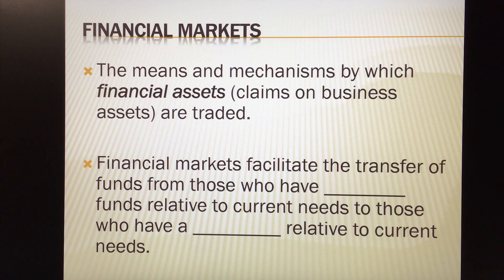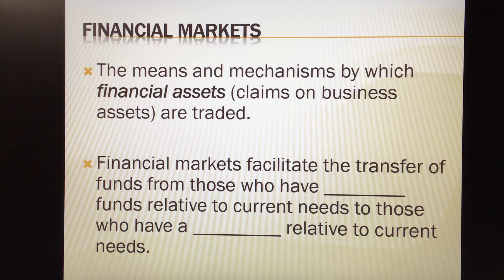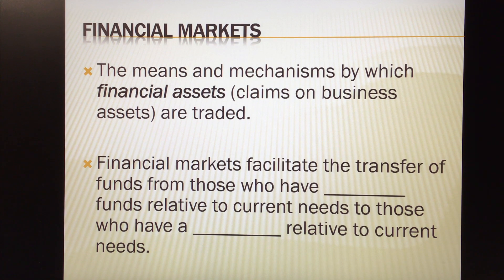Financial markets represent the means and mechanisms by which financial assets are traded. Financial assets represent primarily debt and equity — those are the claims on business assets. Debt and equity are distinguished in three basic aspects: debt provides a fixed return, whereas equity provides a variable return; debt is characterized by a finite term, equity by an infinite term; and debt represents a first claim on income and assets, while equity represents a residual claim on income and assets. Financial markets are basically the arena in which financial assets — stocks, bonds, and such — are traded.